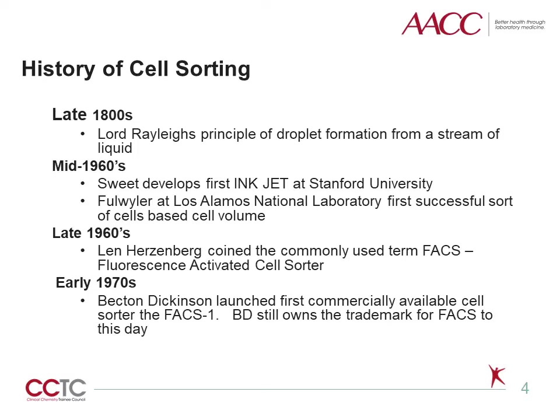Mack Fulweiler adapted this principle for use with a Coulter cell sizing instrument and successfully separated a mixture of mouse and human erythrocytes based on cell volume. Around the same time, an immunologist from Stanford, Leonard Herzenberg, used Fulweiler's adaptation and built an instrument capable of identifying and rapidly sorting live cells based on distinctive scatter properties and different surface molecules detected by fluorescently tagged antibodies. The first fluorescent-activated cell sorter was born.